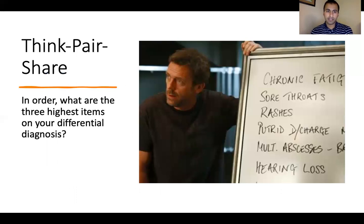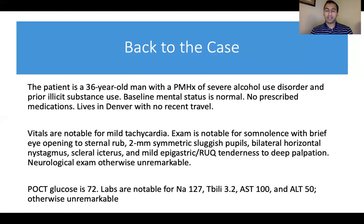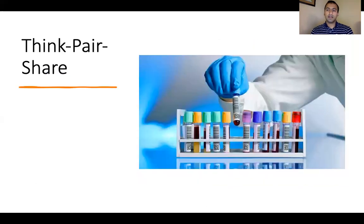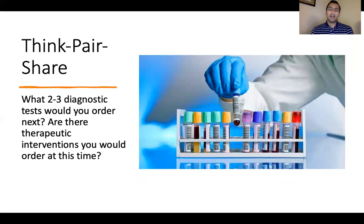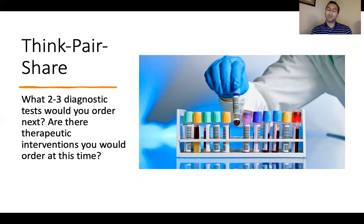Another think-pair-share activity: take one to two minutes to think about what are the three highest items on your differential diagnosis, in order. Then, take another one to two minutes to figure out what are the two to three diagnostic tests you would order next. And not a trick question — the answer can be no — but are there any therapeutic interventions you would order at this time?